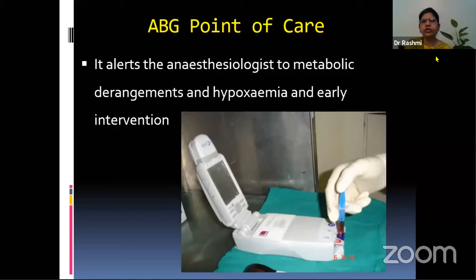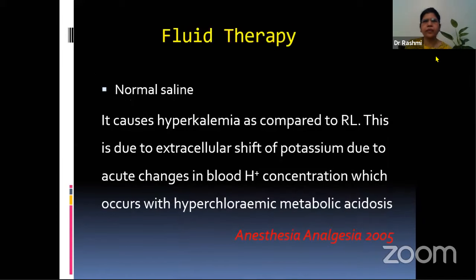ABG, the point-of-care monitor, is very useful because we can instantly know if the patient is acidotic and control it by giving sodium bicarbonate. Fluid therapy is the most important aspect of renal transplant.